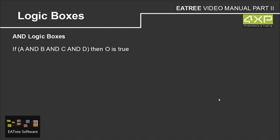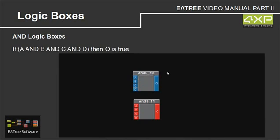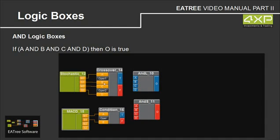AND logic boxes. If A and B and C and D, then O is true. Of this AND box, we have two different boxes: AND L for AND long, and AND S for AND short. The logic behind both boxes is the same, but they have different colors and different uses — long and short.